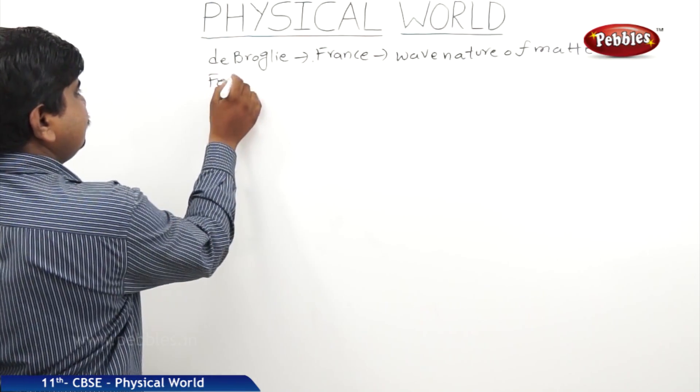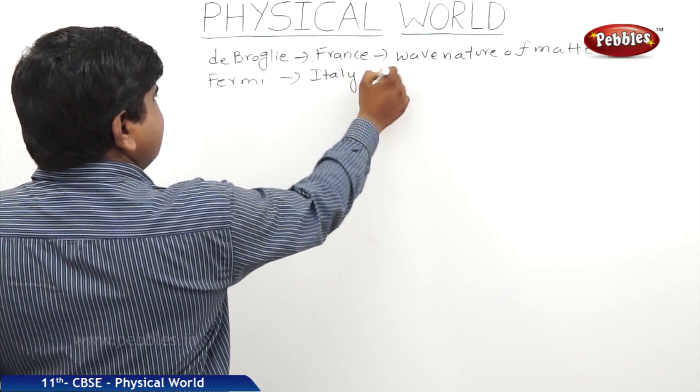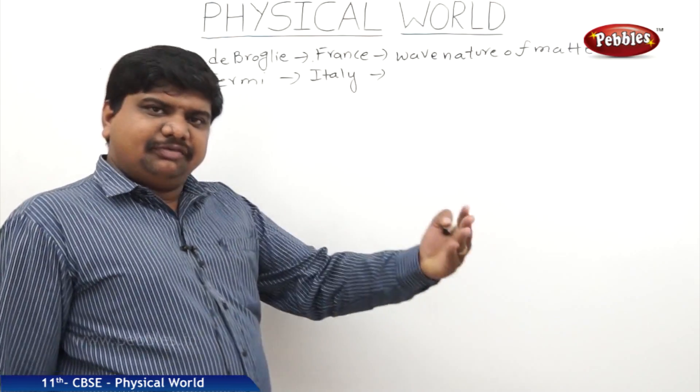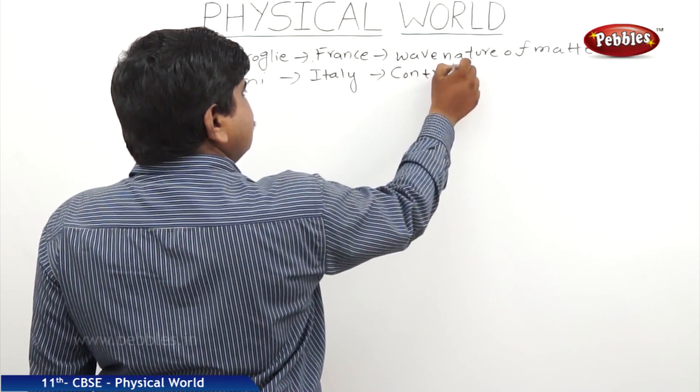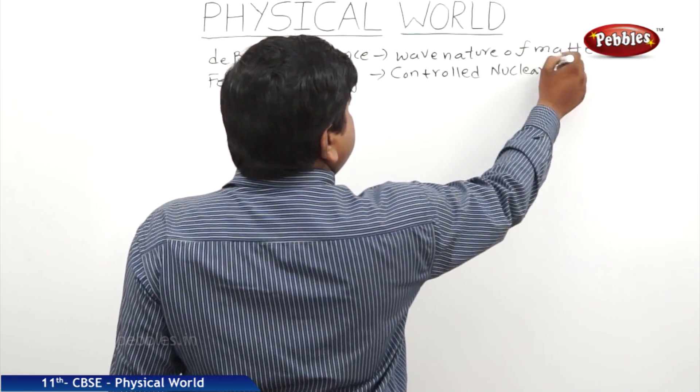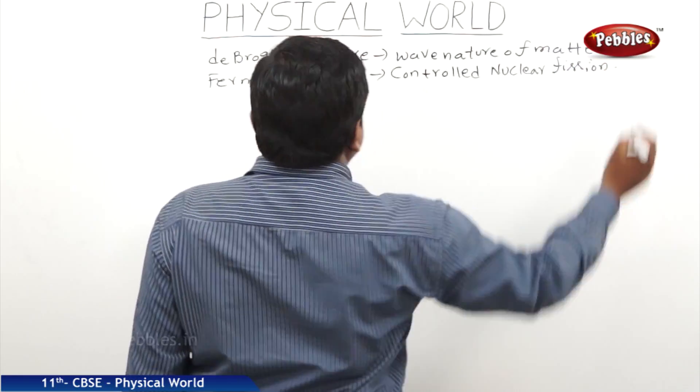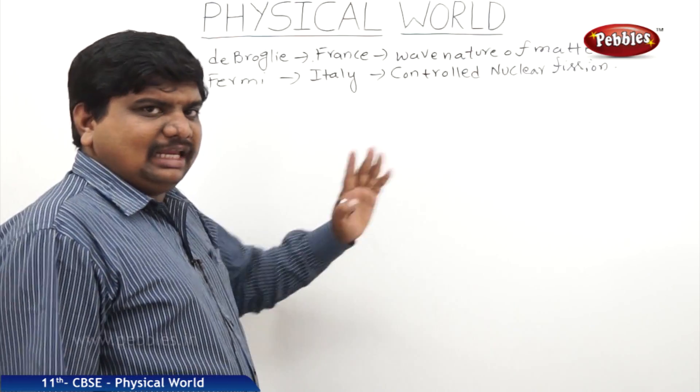Next one, Fermi, he is from Italy. Fermi, who has discovered the controlled nuclear fission. We can say that Fermi was the founder or the inventor of nuclear reactor.